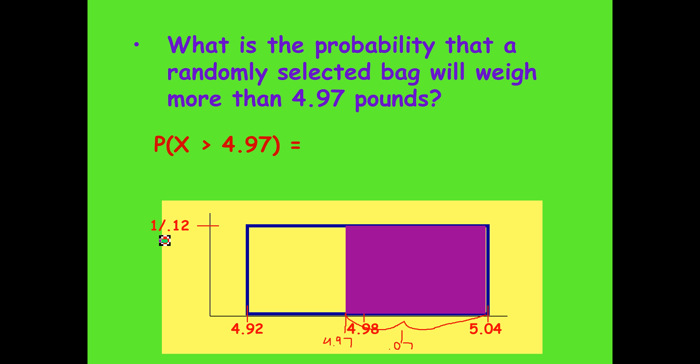Because the height of this area goes from the bottom to the top, and that's just 1 over 0.12. And of course, to find the area of the rectangle, all you need to do is multiply the length times the height, or the base times the height. And what do you get? 0.07 times 1 divided by 0.12 equals 0.5833. So the probability that a bag will weigh more than 4.97 pounds is 0.5833, which is the area, which is this area right here.